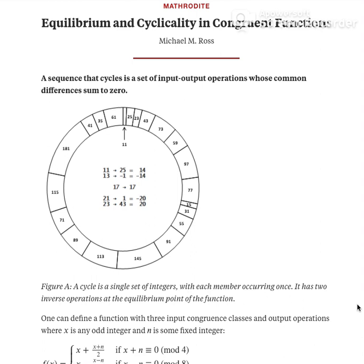I'm going to define a sequence that cycles as a set of input and output operations whose common differences sum to zero. Here is the wheel of numbers that we saw around Vitruvian man. They represent input-output operations whose common differences sum to zero. You will notice there is an input 17, output 17 operation, which means it's the equilibrium point of this sequence.